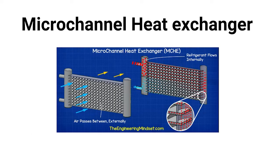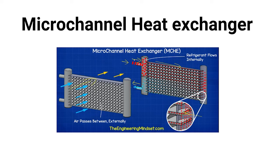The figure shows the working of a Micro Channel Heat Exchanger. The red color indicates the hot fluid and the blue color indicates the cold fluid. The fluid enters in one direction, passing through small passageways as shown in the figure. Air passes in the transverse direction, getting heated up by absorbing heat from the hot fluid. In turn, the coolant or refrigerant gets cooled down, exchanging heat to the air, which gets heated up.